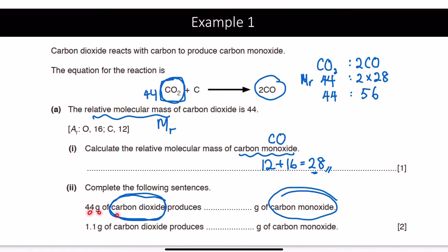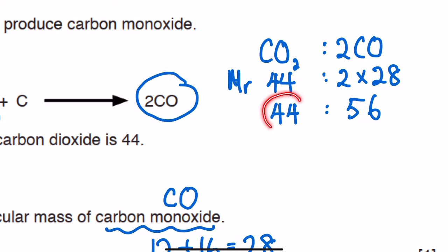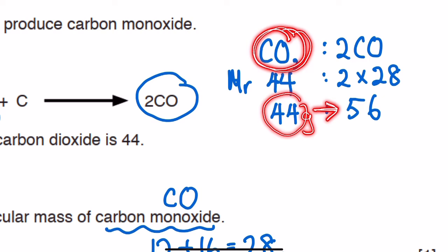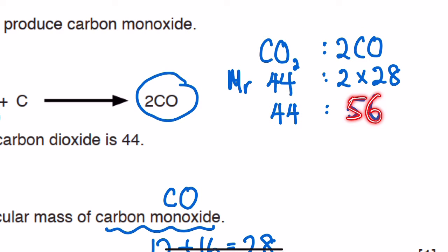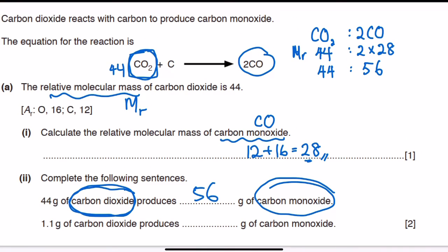Reading back the question: 44 grams of carbon dioxide produces blank grams of carbon monoxide. The 44 in the question exactly matches the Mr column for CO₂, so reading across the row, 44 grams of carbon dioxide will produce 56 grams of carbon monoxide. The answer is 56.